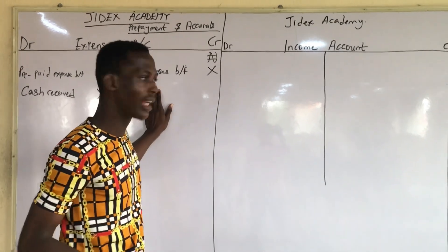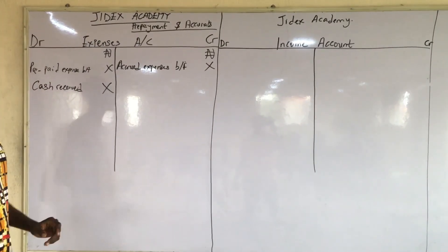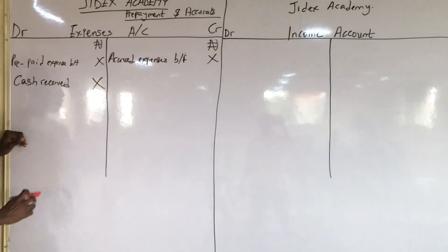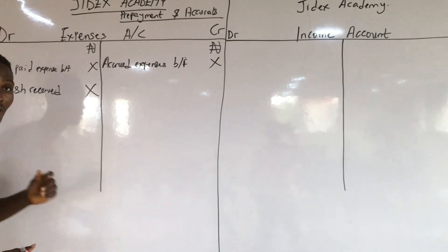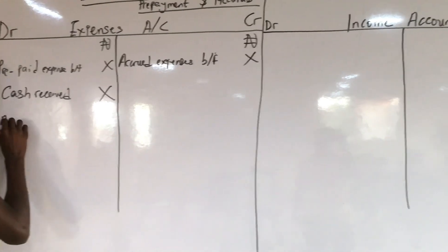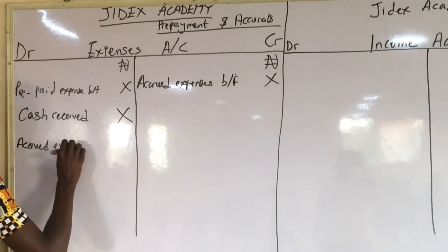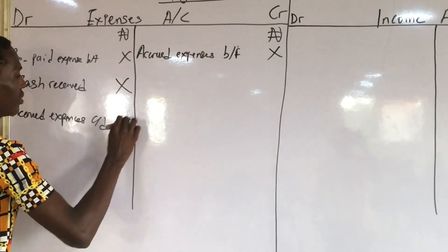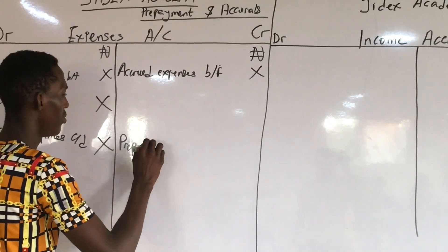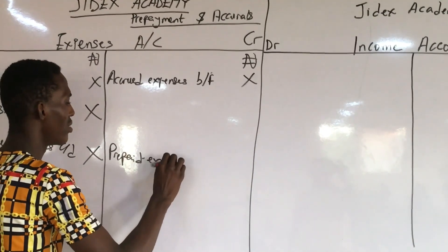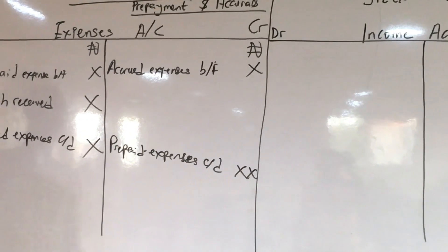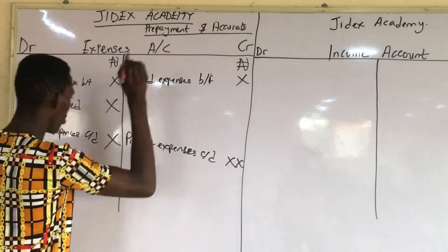We also have the closing balance for both accrued expenses and prepaid expenses. The closing balance for accrued expenses is carried down on the debit side, because we are going to be carrying it forward into the next period, where it will appear on the credit side. Prepaid expenses is also carried down on the debit side.